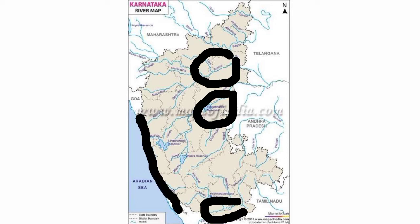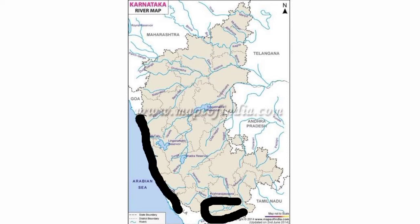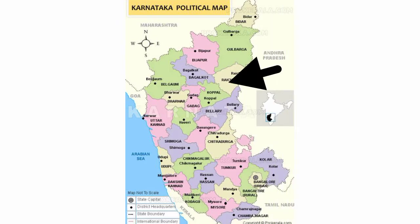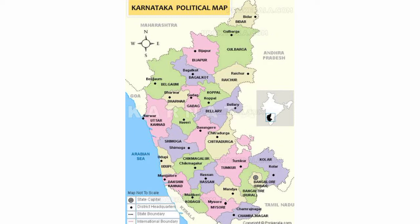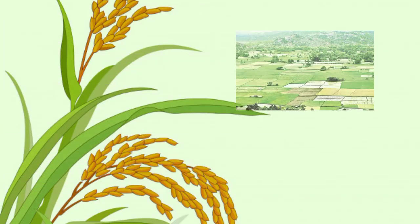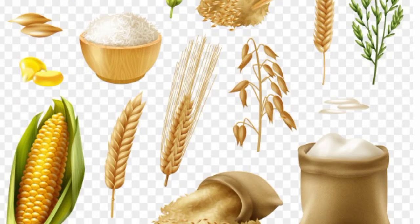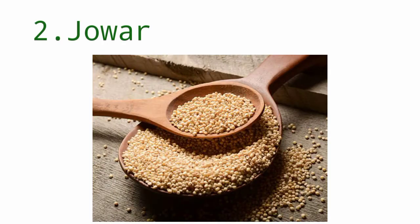Paddy is grown in all districts of Karnataka. The Krishna-Tungabhadra valley, Kaveri valley, and the coastal districts are the most famous for paddy cultivation. Raichur district stands in first position in producing paddy, followed by Ballari, Shivamogga, Davanagere, Mysuru, Mandya, Koppal, Uttara Kannada, Udupi, Dakshina Kannada, and Kalaburagi. Other paddy-growing areas include Tumkur, Hassan, Chikkamagaluru, Kodagu, and Belagavi.